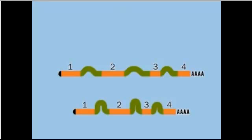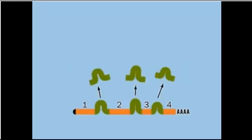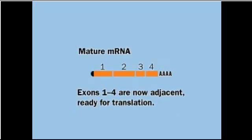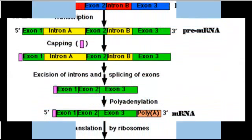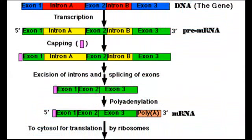Ribonucleoprotein assemblies called spliceosomes do the splicing. The result of 5' capping, 3' polyadenylation, and RNA splicing is a mature eukaryotic mRNA.